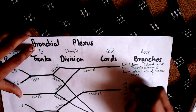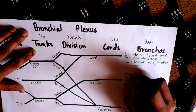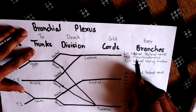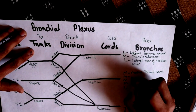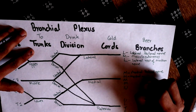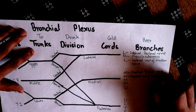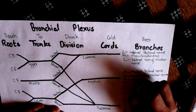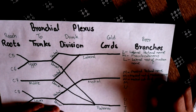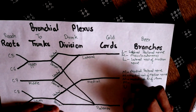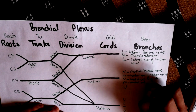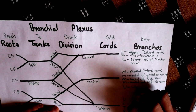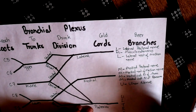The mnemonic for branches from the medial cord is 'YUM 4U' — you write YUM four times and U. The first M is the medial pectoral nerve, the second M is the medial root of the median nerve, the third M is the medial cutaneous nerve of the arm, the fourth M is the medial cutaneous nerve of the forearm, and U represents the ulnar nerve.